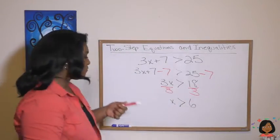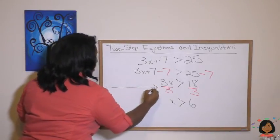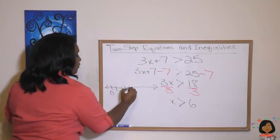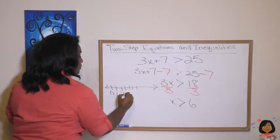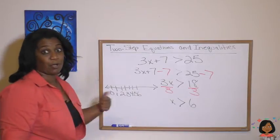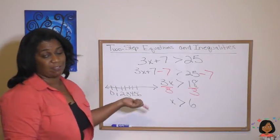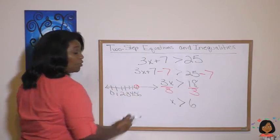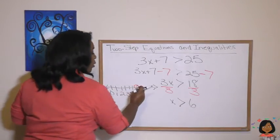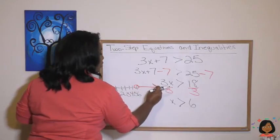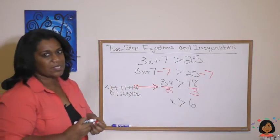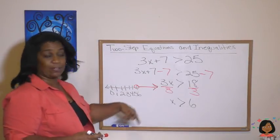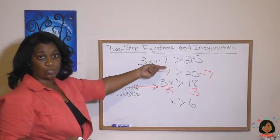So if we had to graph this, here's my quickie number line. Let's say 0 is here. 1, 2, 3, 4, 5, 6. We have to just remember our rules for graphing. x is greater than 6. It doesn't say greater than or equal to. So we are going to put an open circle on 6. And we are going to shade in everything to the right. So what does this mean? It means the answer to this problem is any number that's greater than 6 will make this true.